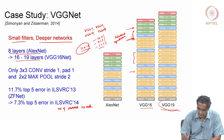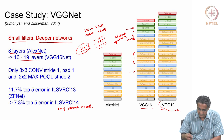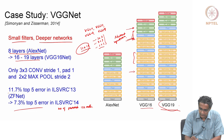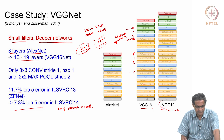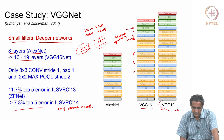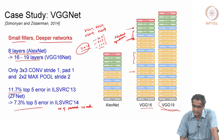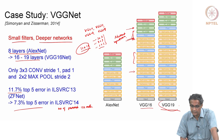VGGNet achieved a 7.3% top-5 error, down from 11.7% for ZFNet. This VGGNet is a very well-known and popular network that people use widely for many tasks.